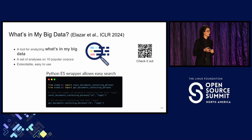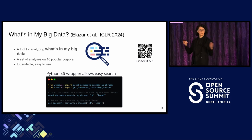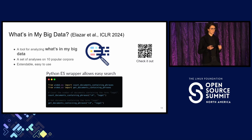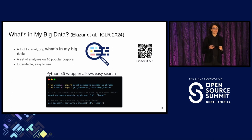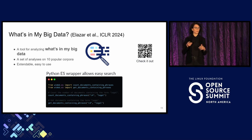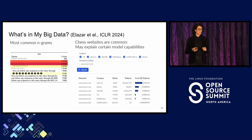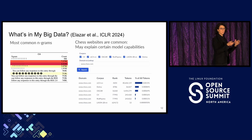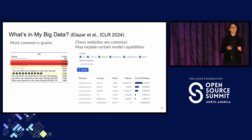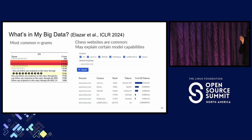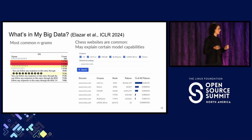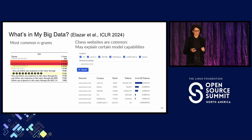The data we curate is of high quality, but it's really useful and important to go over the data and qualitatively analyze it. We have developed this tool called 'What's in my Big Data,' using which we have indexed the data and provided counting and search capabilities. For example, the most common n-grams in some popular training datasets are a long sequence of question marks. Or chess.com is one of the most popular websites in C4 and many other pre-training datasets, maybe alluding to the fact of why some of these datasets are good at playing chess.